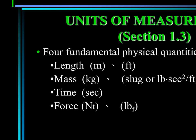Unit of measurement: there are four fundamental physical quantities — length, mass, time, and force — and they have different units. In the SI system, length is meters, mass is kilograms, time is seconds, and force is Newtons. In the English system, length is feet, mass is the slug (pound times second squared over foot), time is seconds, and force is in pounds-force.